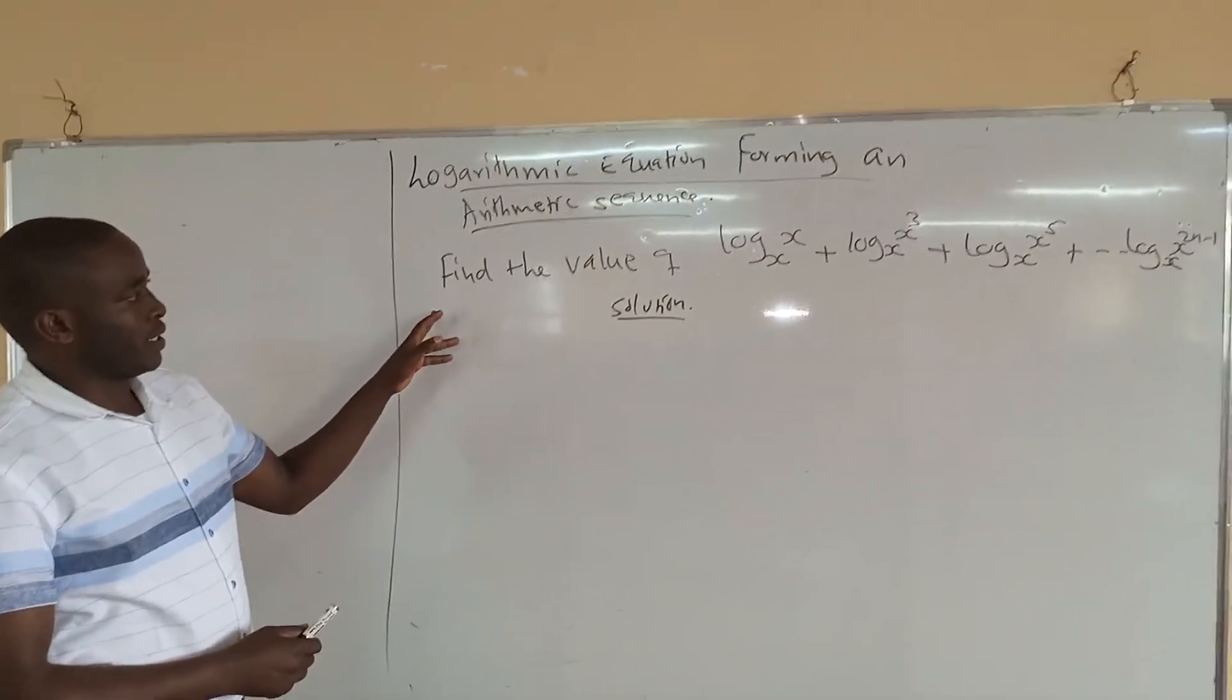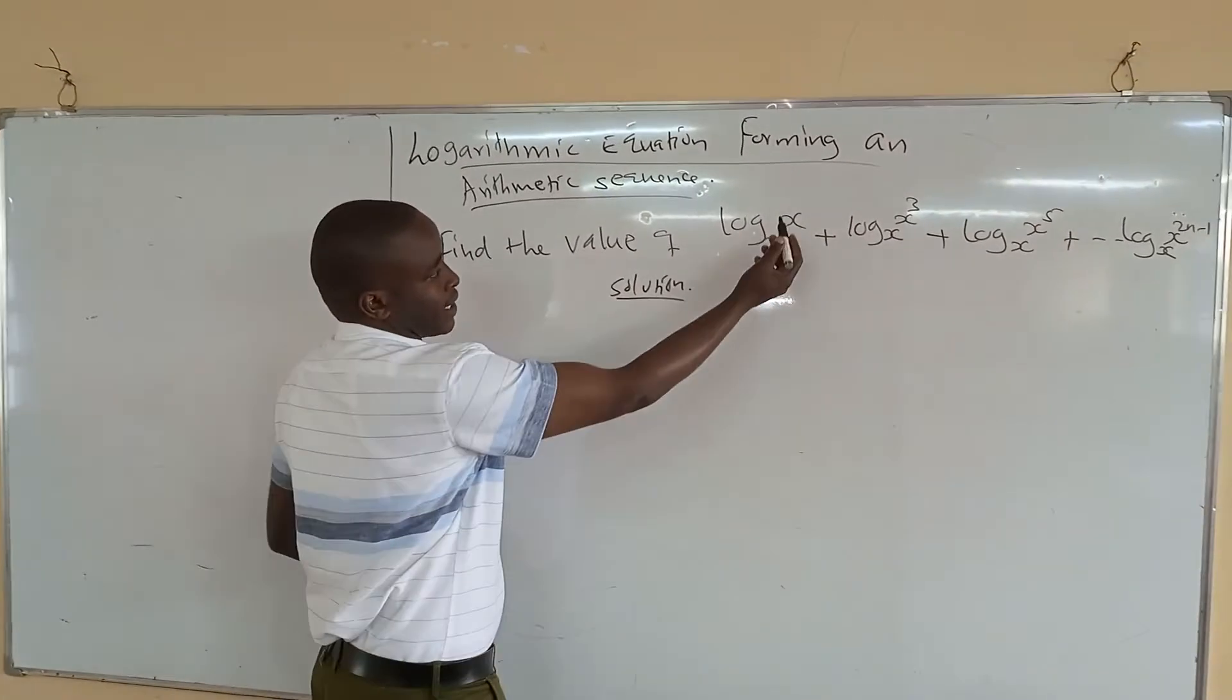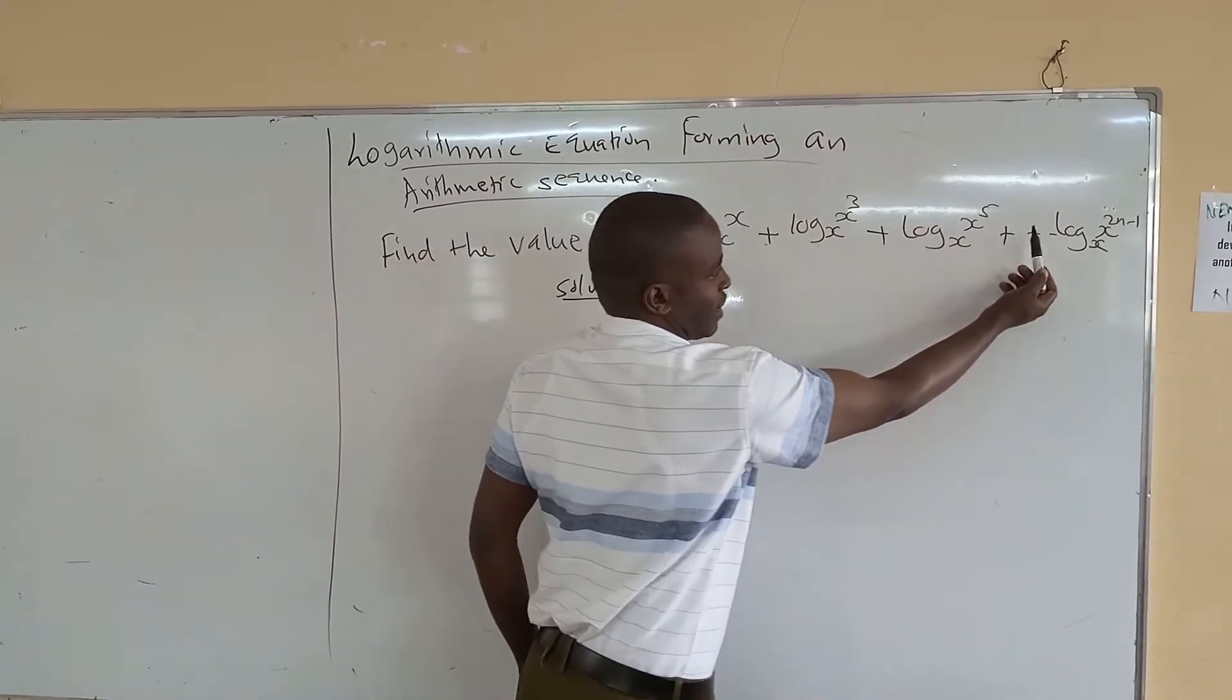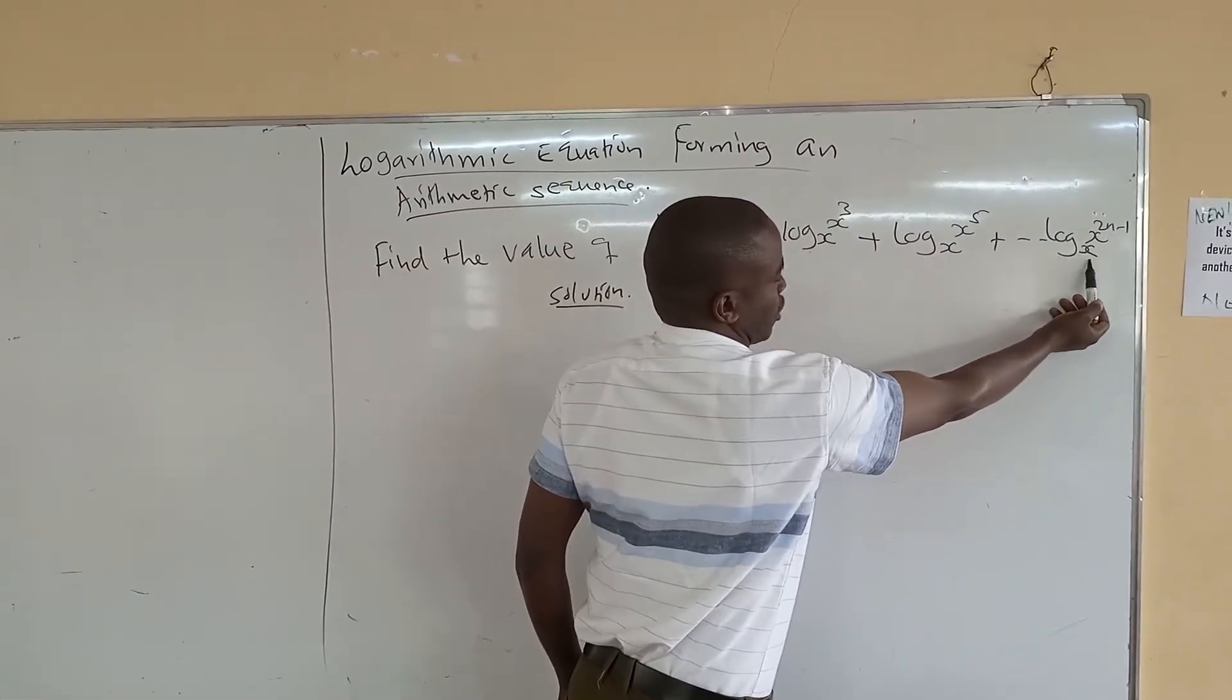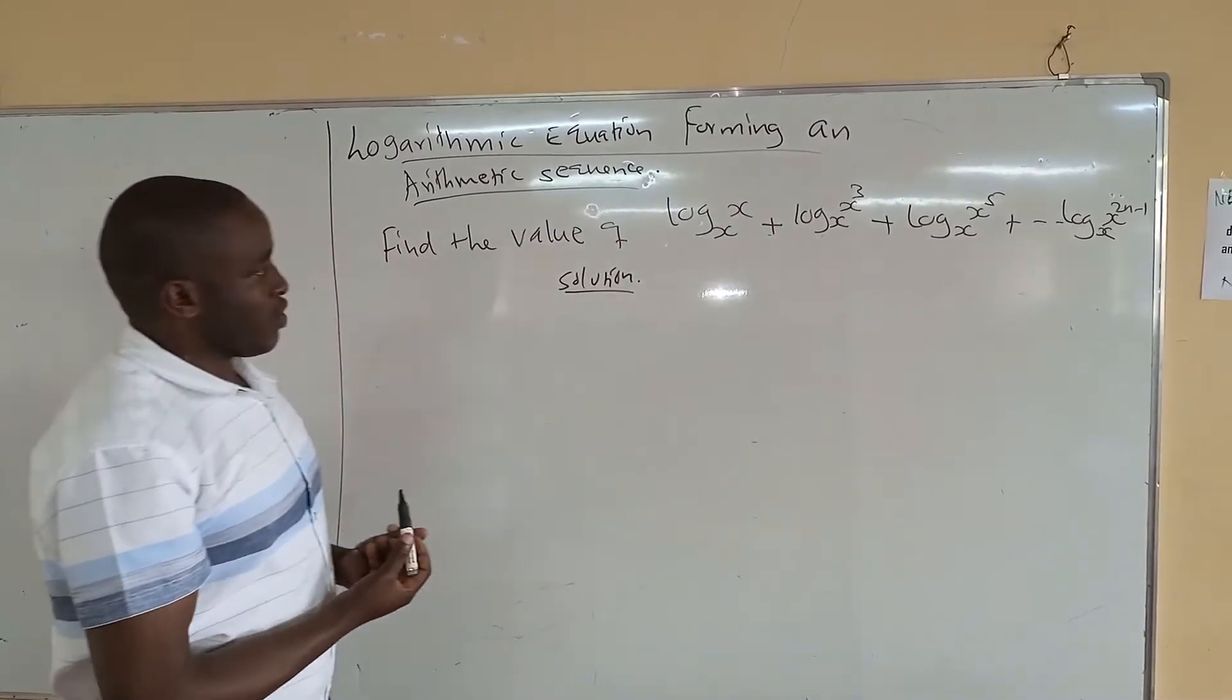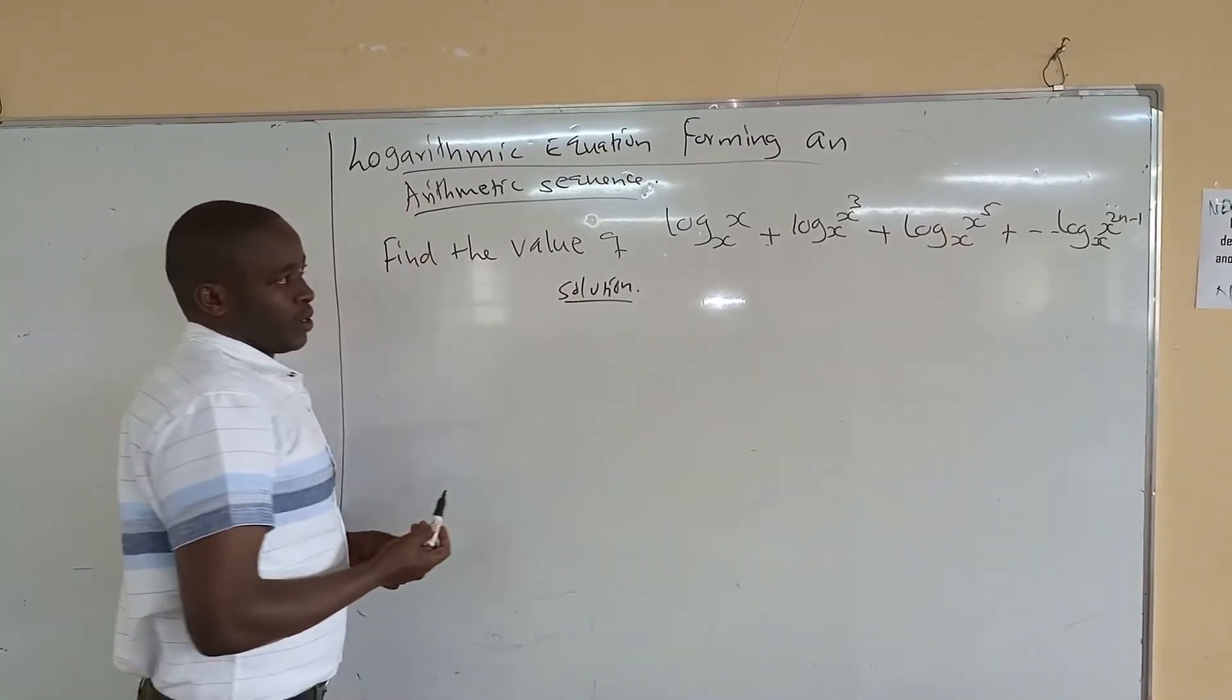Then we want to do an example here to find the value of log x to x plus log x to x cubed plus log x to x power 5 plus up to log x to x power 2n minus 1. We want to find the value of that. That means if you add this plus this up to how many times they add to the last term.